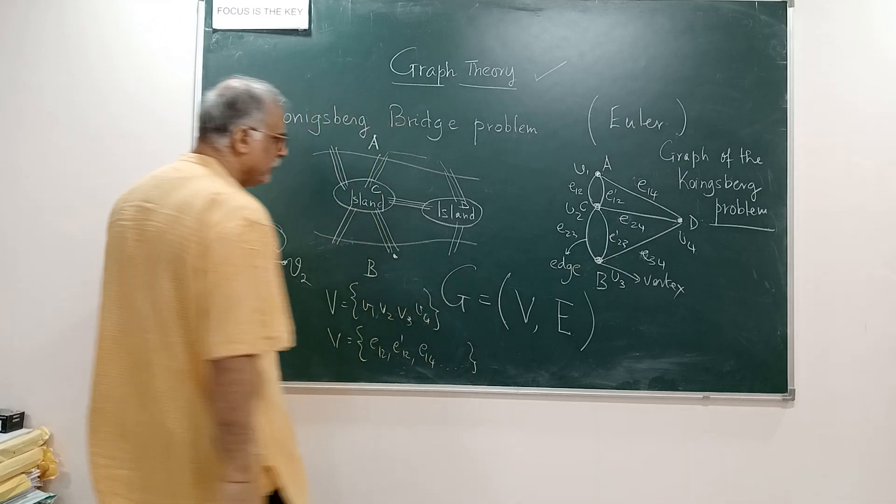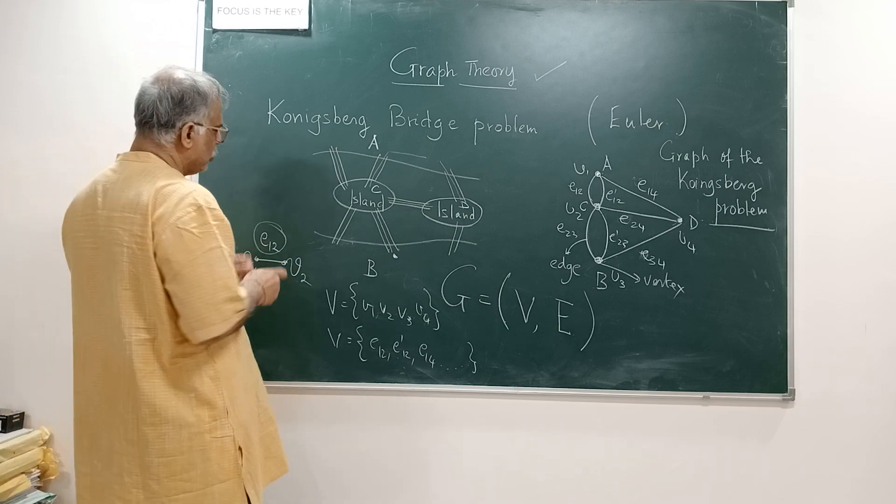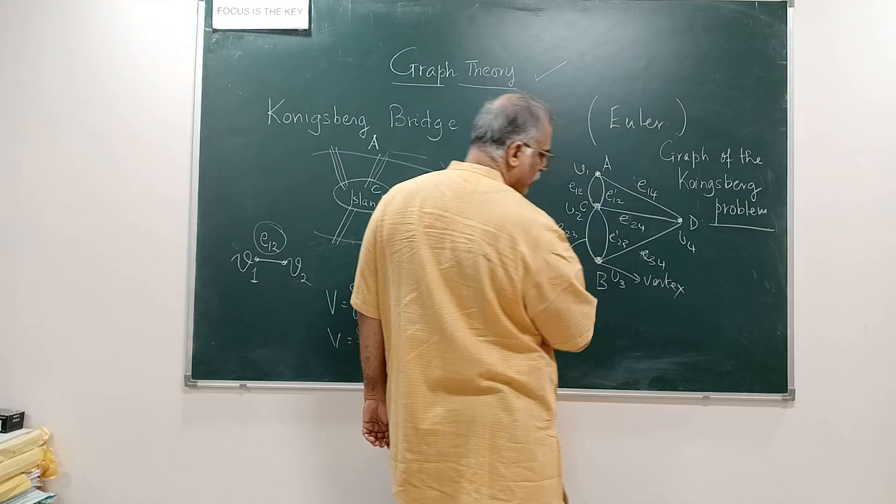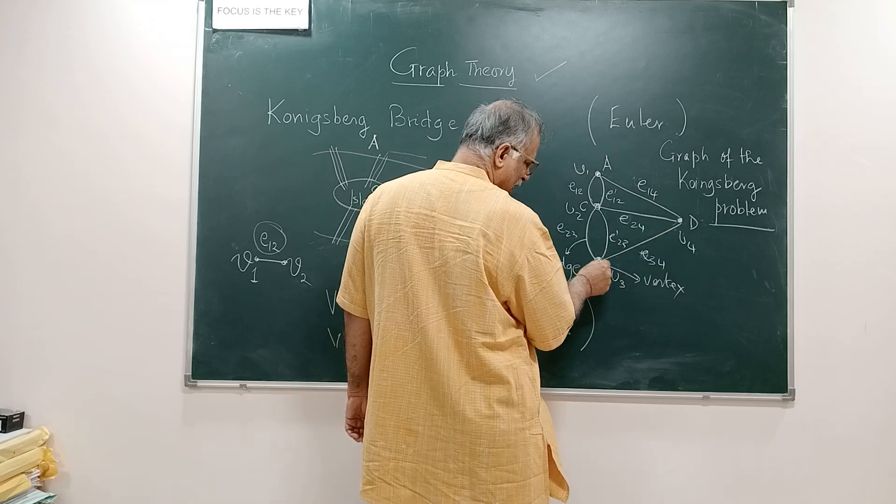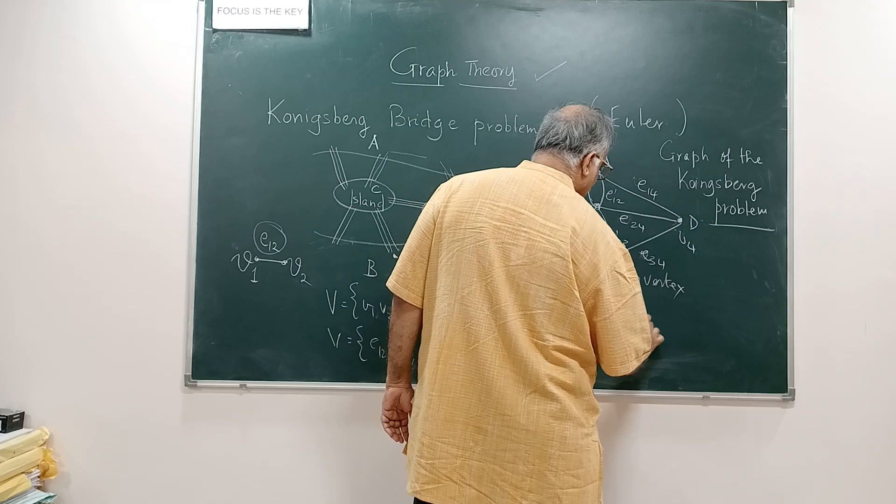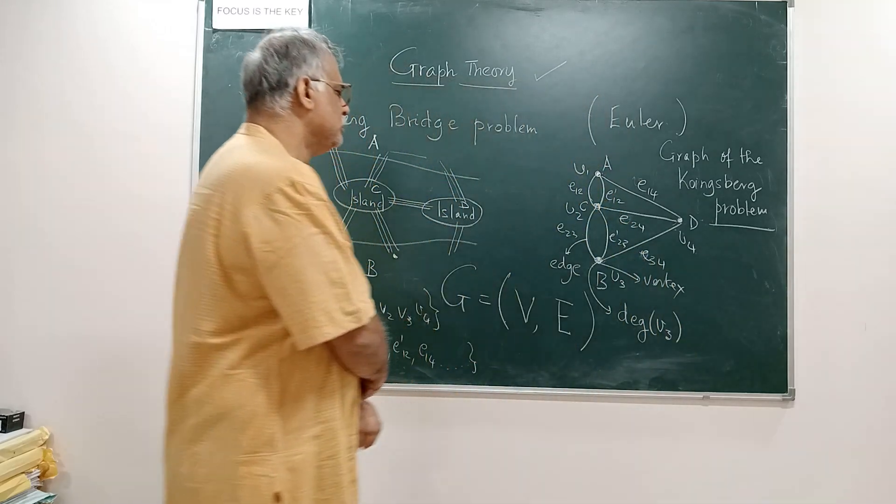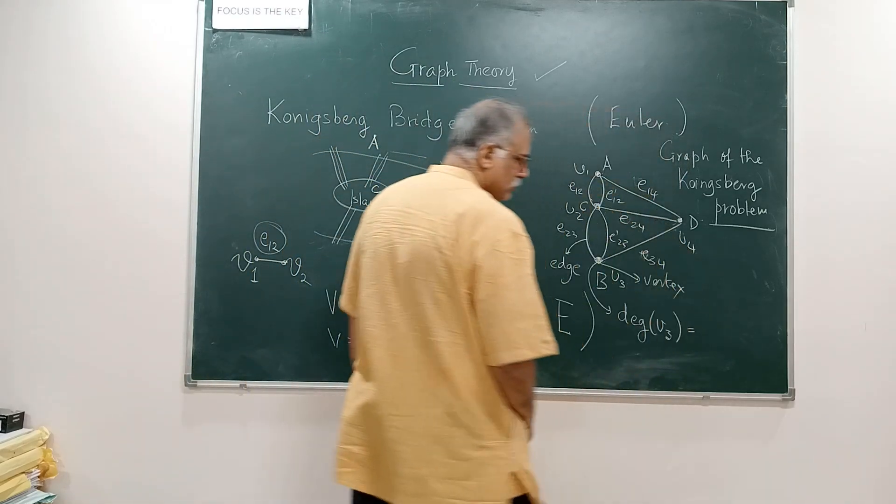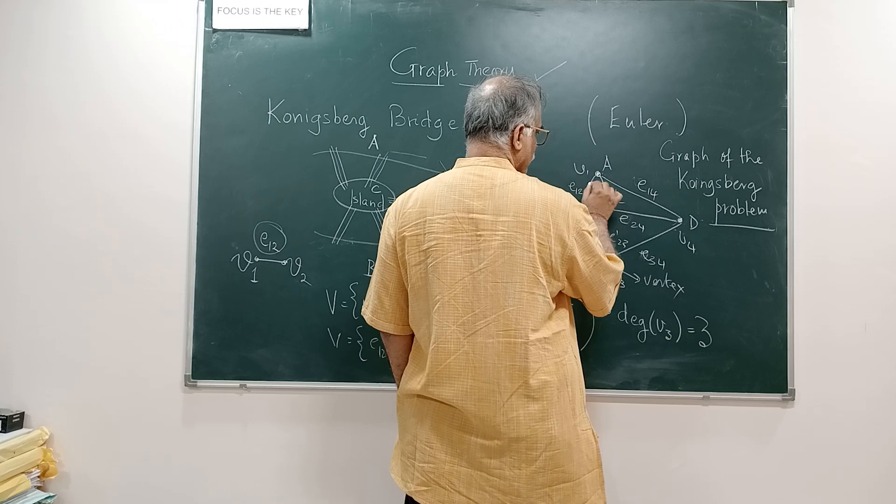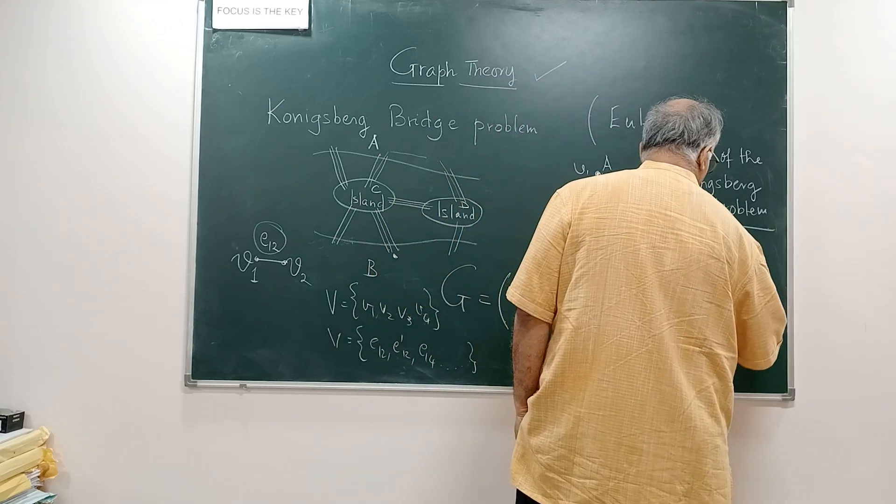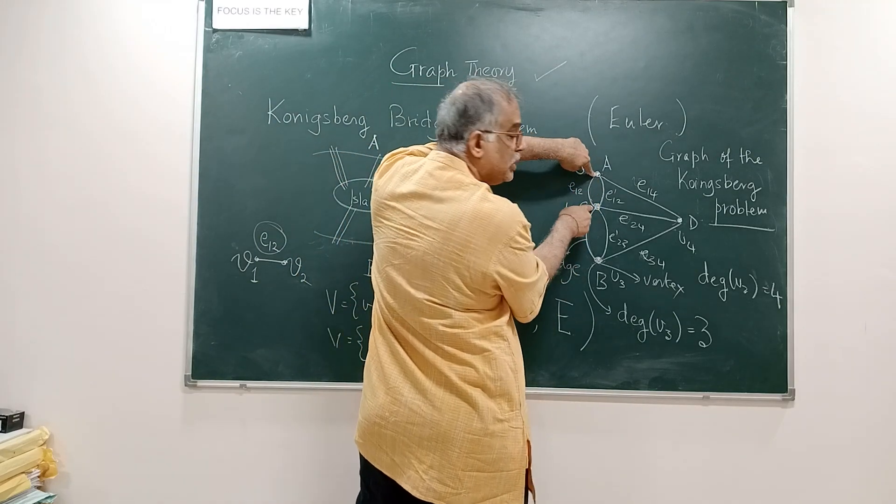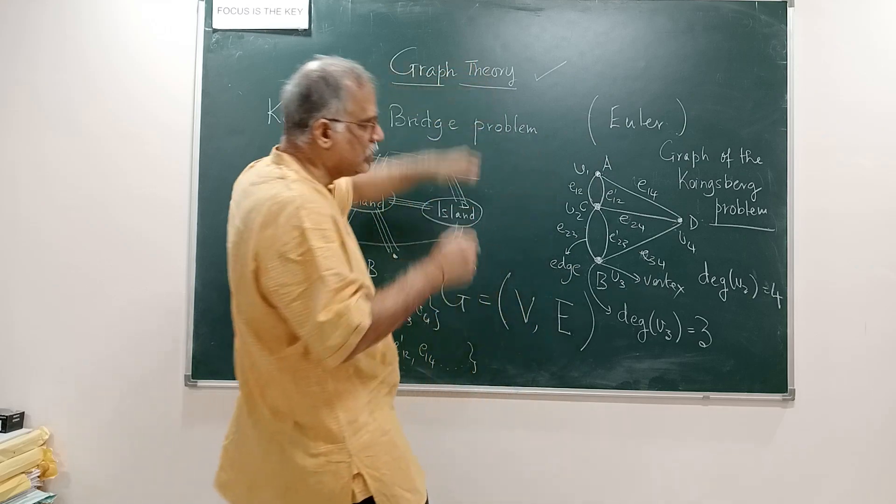Every edge has a name. There is an interesting thing, we say an edge is incident on a vertex. The number of edges that is incident on a vertex is called the degree of the vertex. For example, degree of V3 is 3, there are 3 edges incident here. Degree of V2 is 4. Observe one important thing: given an edge, there are always 2 vertices to which it is incident. That is the meaning of edge, it connects two vertices.